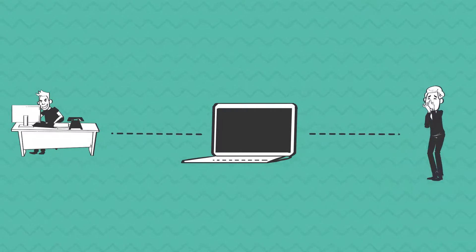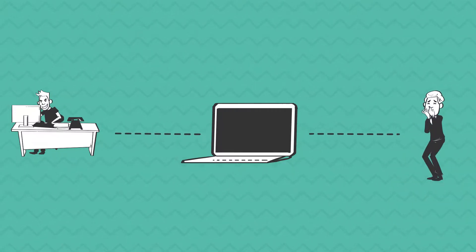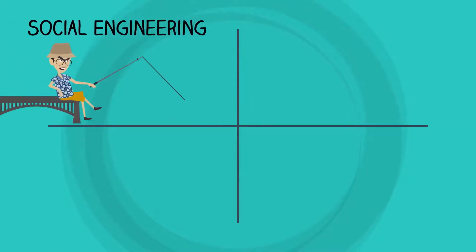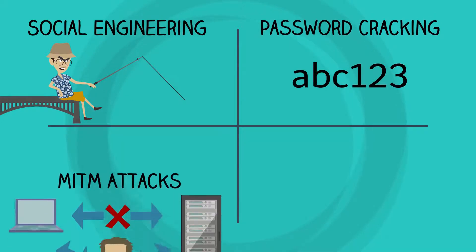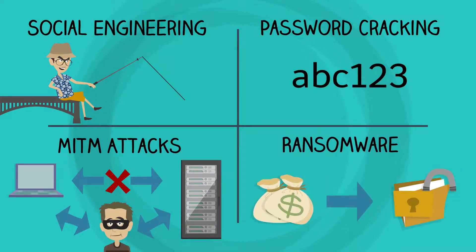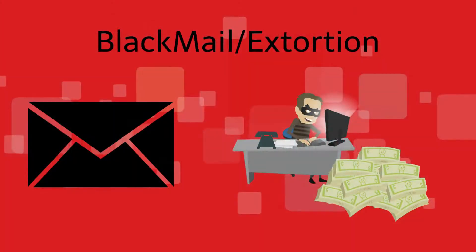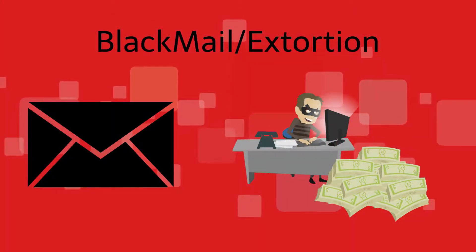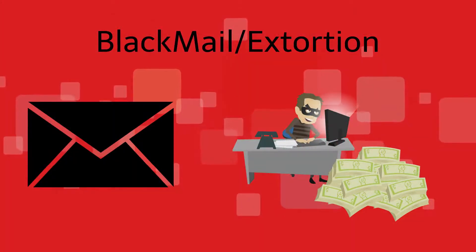Then exploits the victim. Some of the common hacking techniques that a hacker can use to exploit a system are social engineering, password tracking, man-in-the-middle, or ransomware. Victims of cyber coercion are blackmailed or extorted. Blackmailing is when the hacker threatens the victim if they don't do something for them.